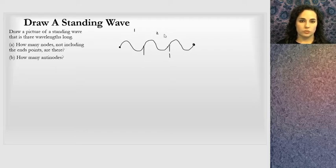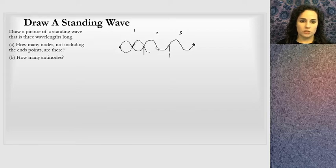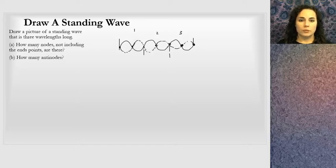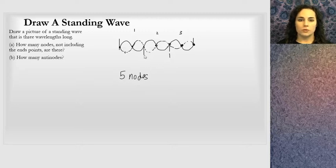If it's a standing wave, it will have nodes at the equilibrium position. Drawing the mirror image around the equilibrium, the nodes appear between the antinodes. Counting the nodes in between — not including the endpoints — I see one, two, three, four, five: five nodes. The antinodes are the peaks: one, two, three, four, five, six antinodes.